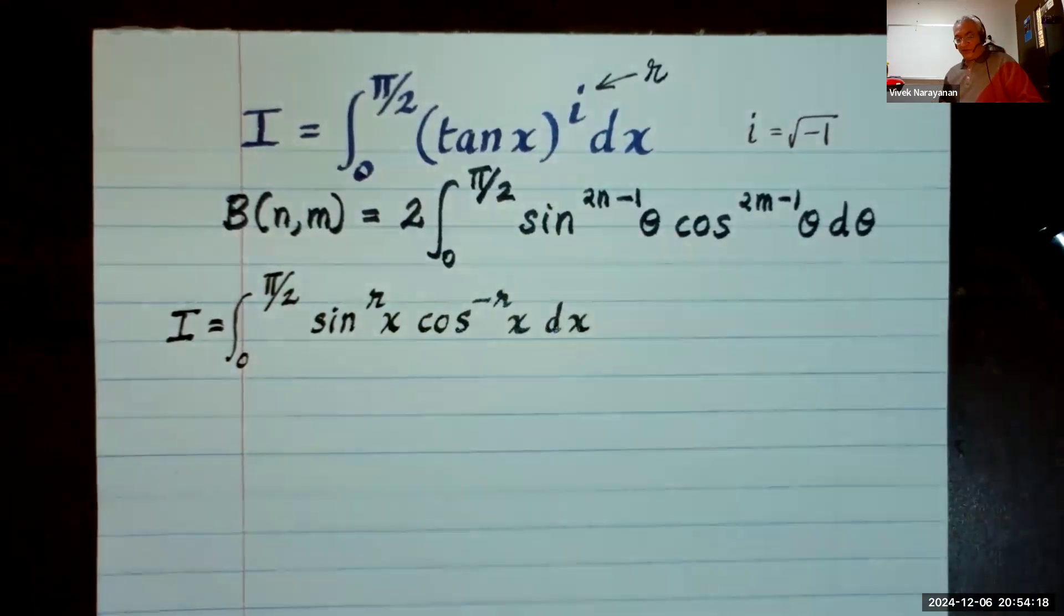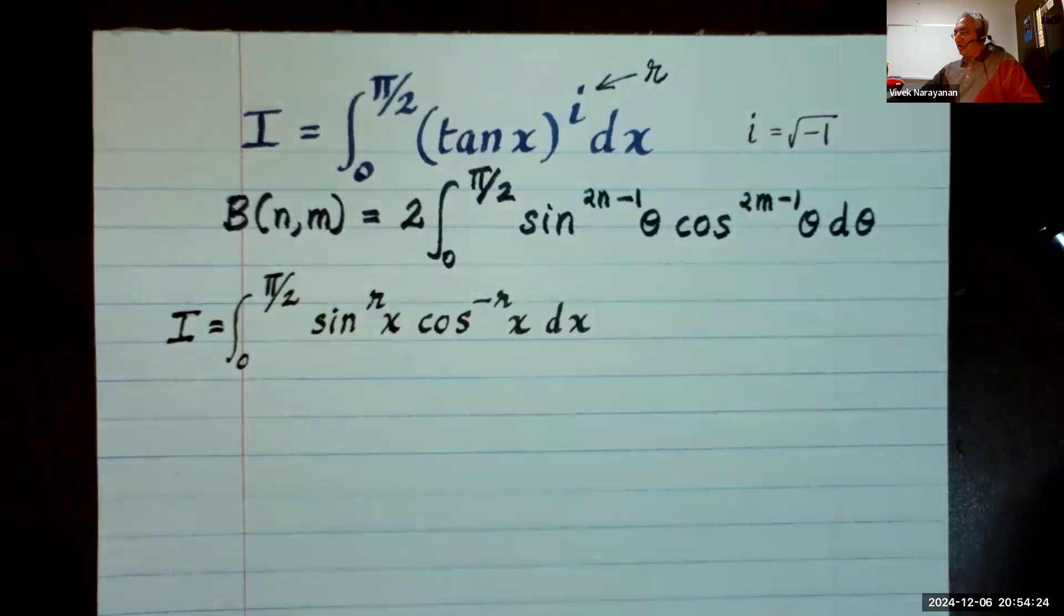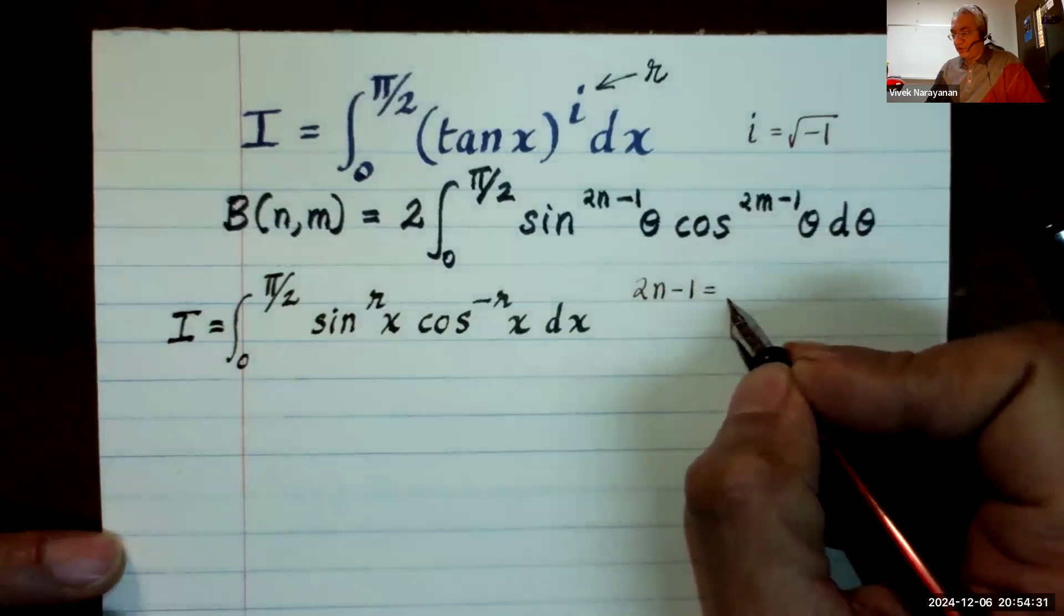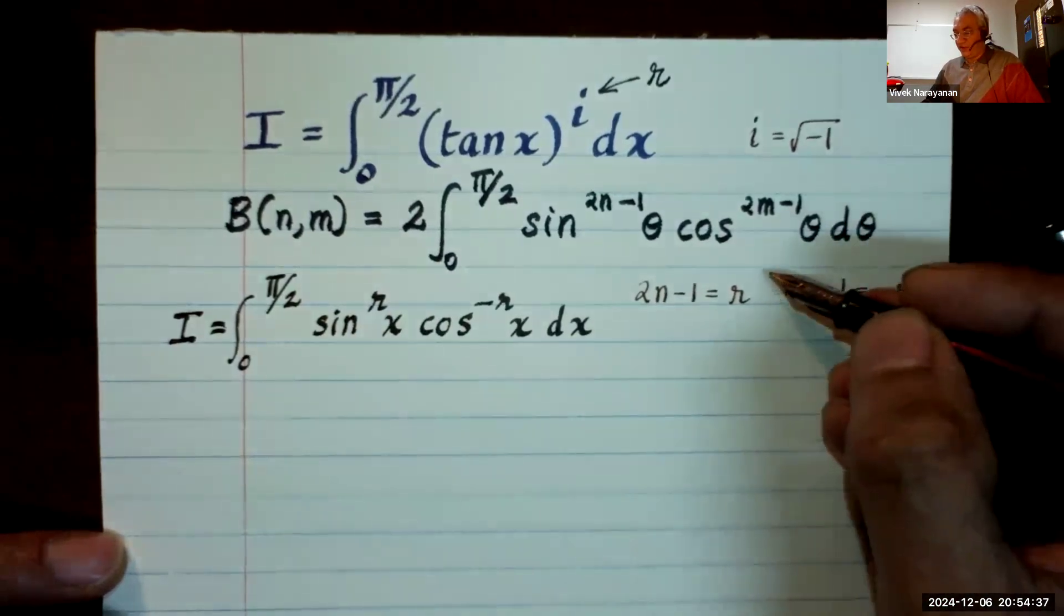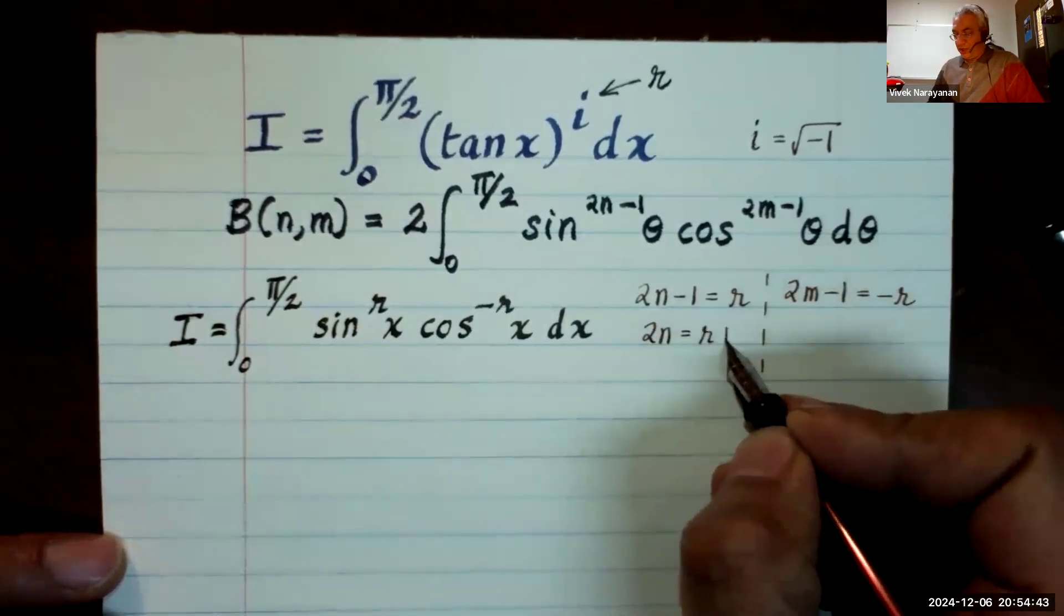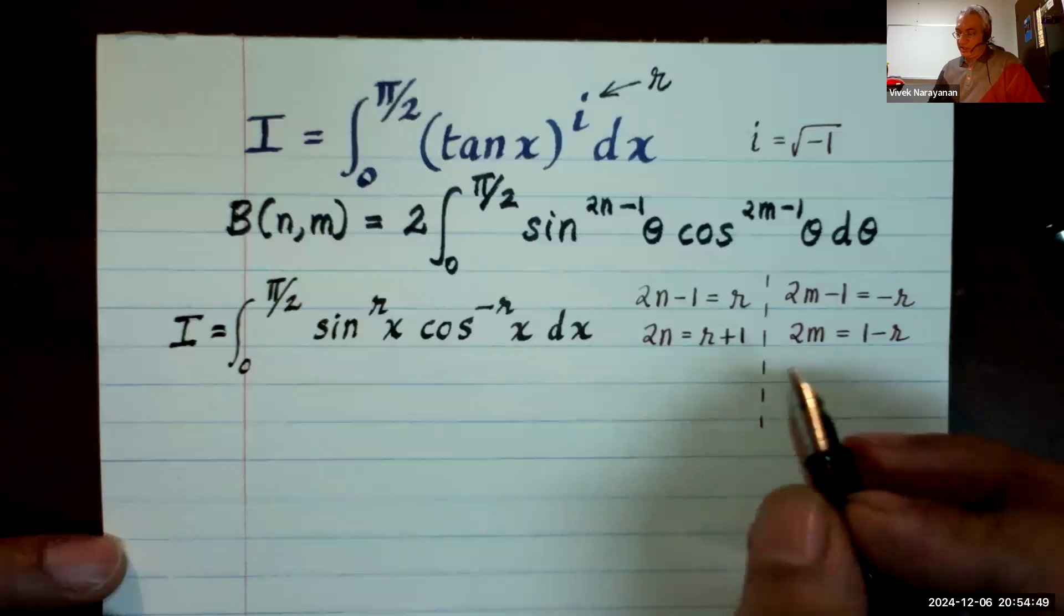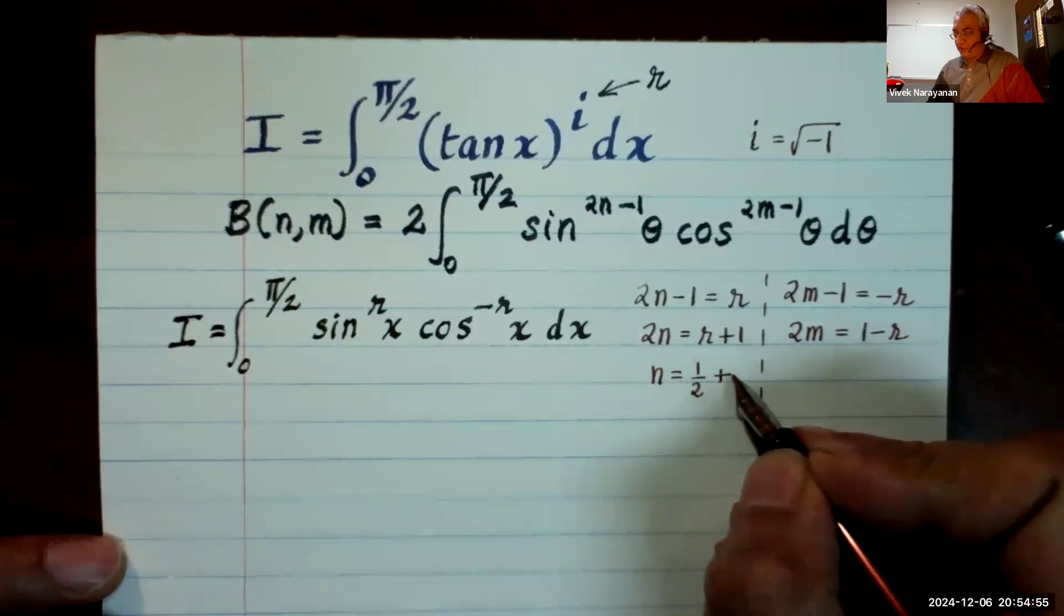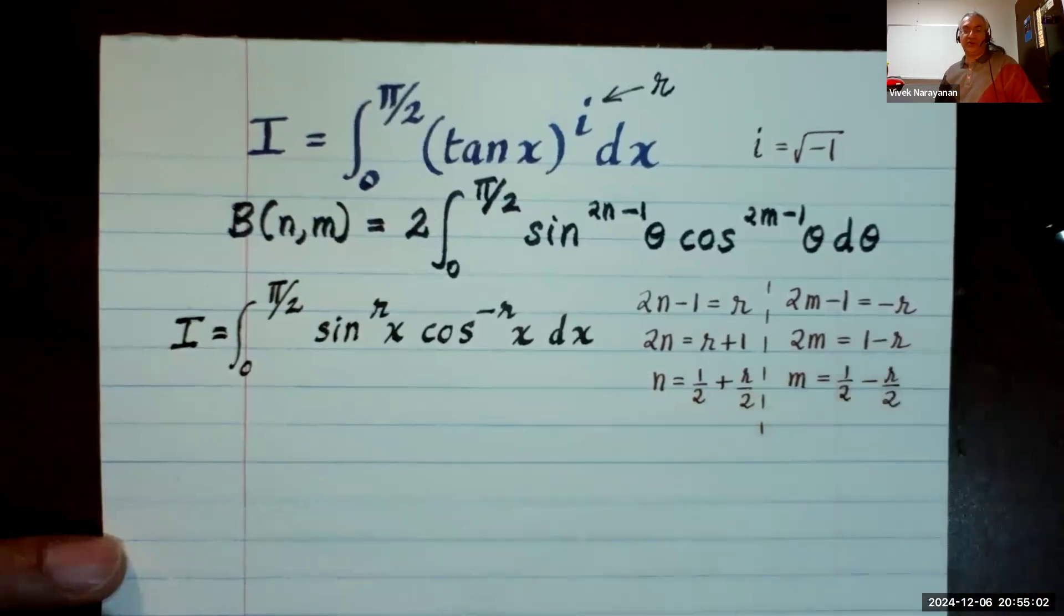Okay, so the resemblance is very good. The factor of 2 we'll have to adjust. So let's figure out the values. I'm going to get 2n minus 1 must equal r, and 2m minus 1 must equal negative r. So this means 2n equals r plus 1, and 2m equals 1 minus r, or n equals 1/2 plus r/2, and m equals 1/2 minus r/2.